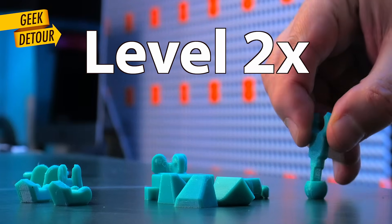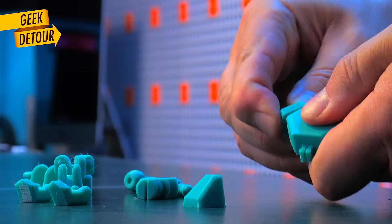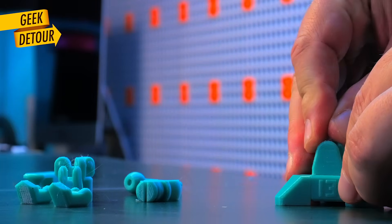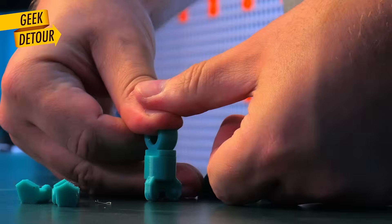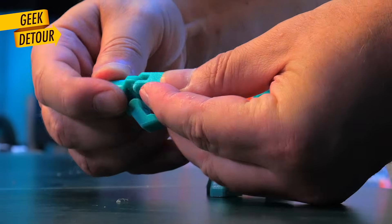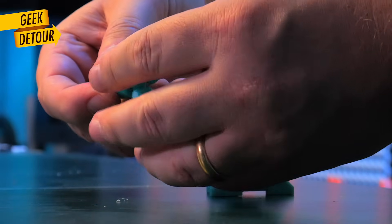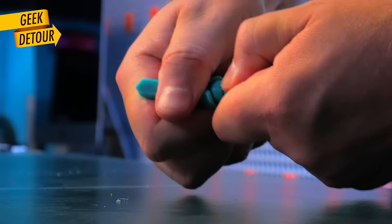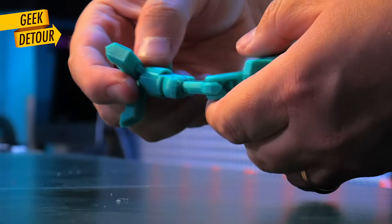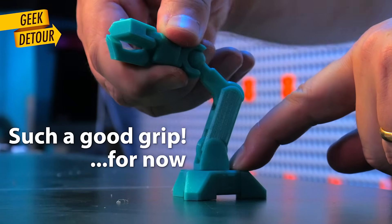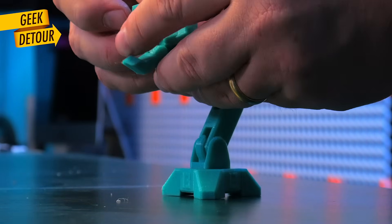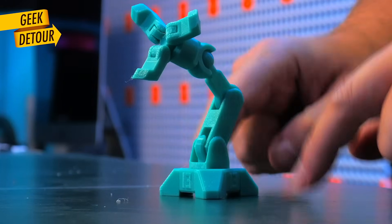Level 2. The parts are much easier to grab twice the size, but it's clearly getting harder to press things together. Level Complete. Still not too bad, let's double it again!